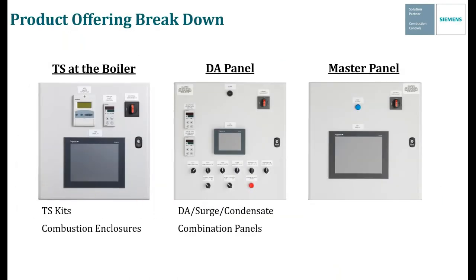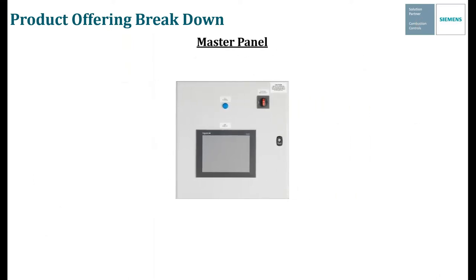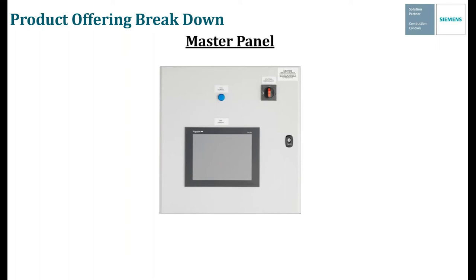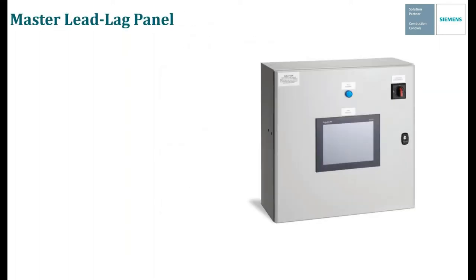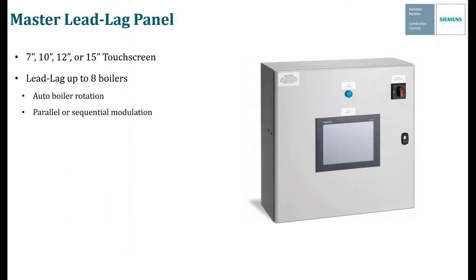Now moving on to the master panel. The master panel is going to lead lag the boilers and tie everything together. It can come with a 7, 10, 12, or 15-inch screen and can lead lag up to eight boilers — telling them what firing rate to go to in order to meet a header pressure set point. It will automatically rotate boilers so no single boiler gets used more than others. It can lead lag them using parallel or sequential modulation.